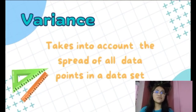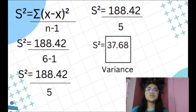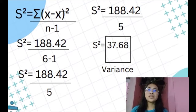Next, variance takes into account the spread of all data points in a data set. To get the variance, the formula is s-squared equals the summation of x minus x-bar raised to 2, over n minus 1. Substituting: s-squared equals 188.42 over 6 minus 1, which is 5. So 188.42 divided by 5 equals 37.68. Our variance is 37.68.